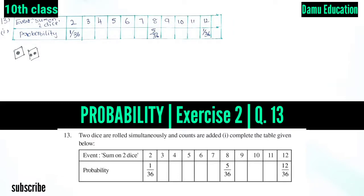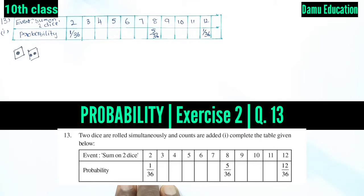Hello friends, welcome to Dhamu Education. If you haven't subscribed yet, please subscribe and click the bell icon. In this module, we are going to discuss our 13th question: two dice are rolled simultaneously and the counts are added.